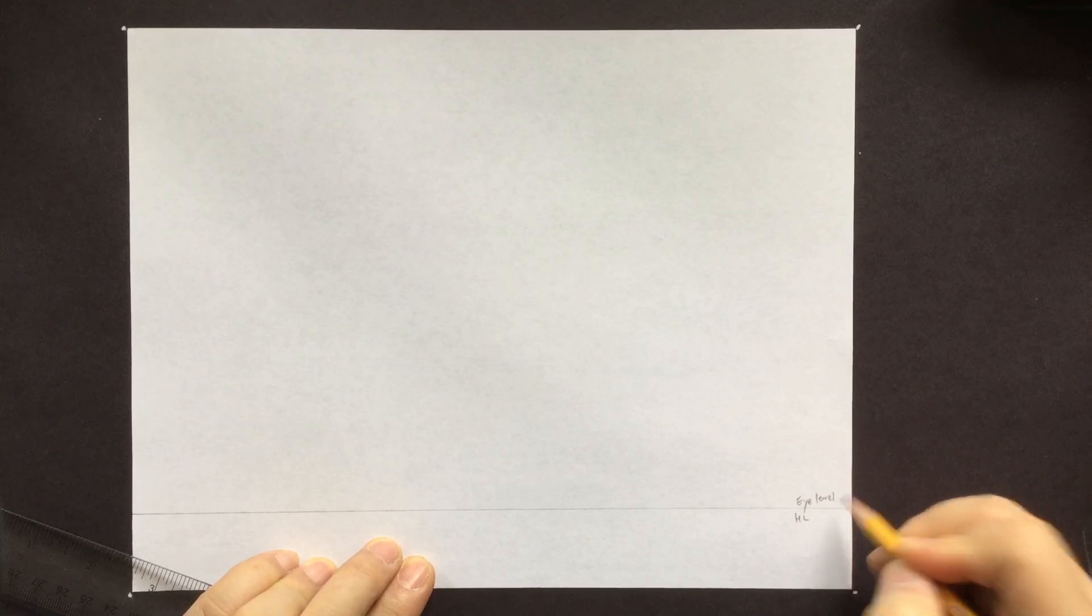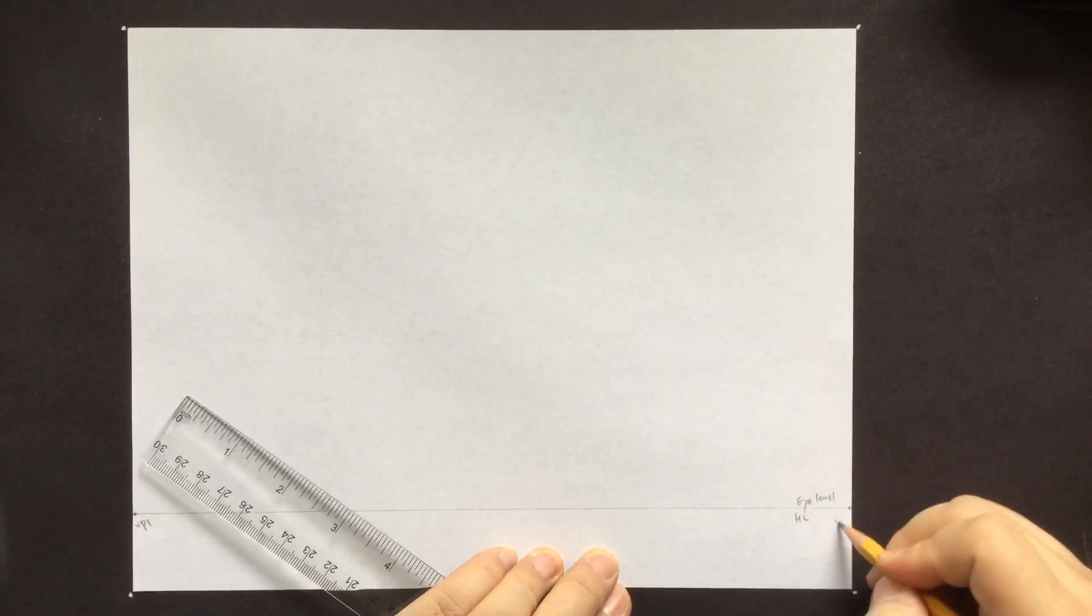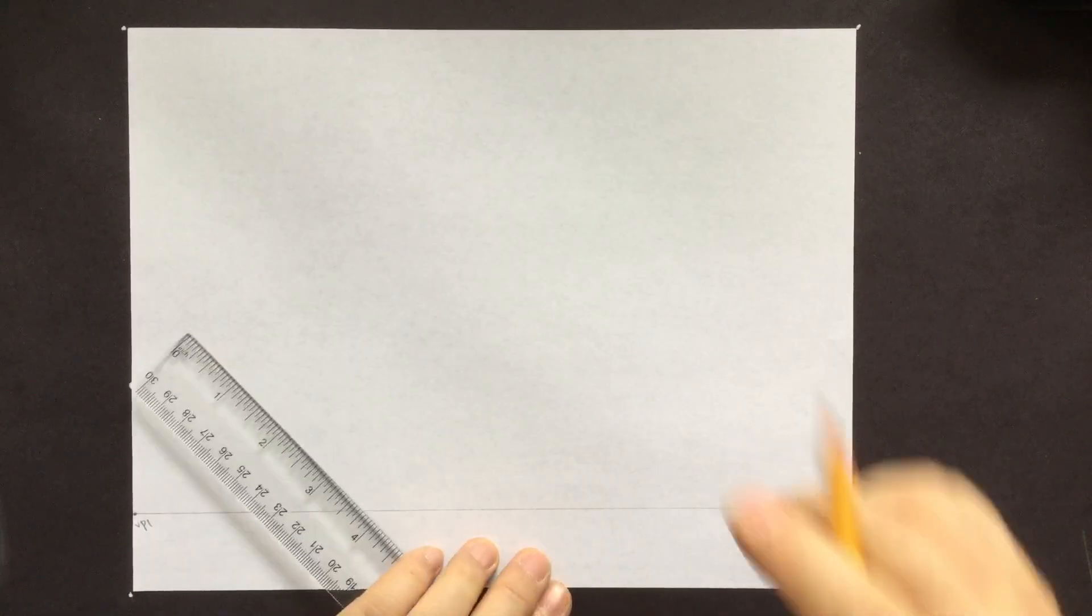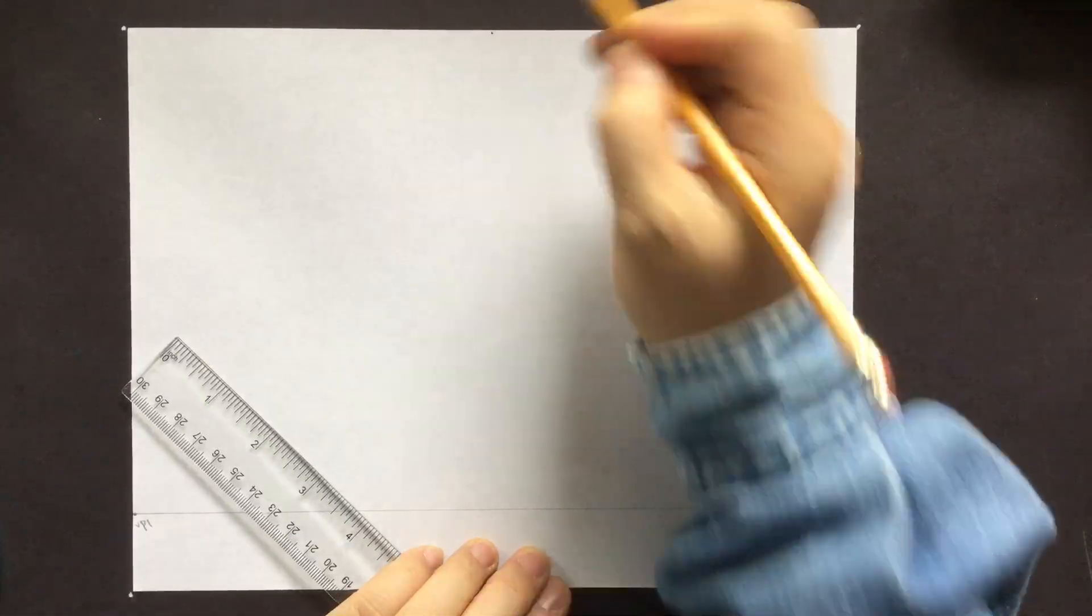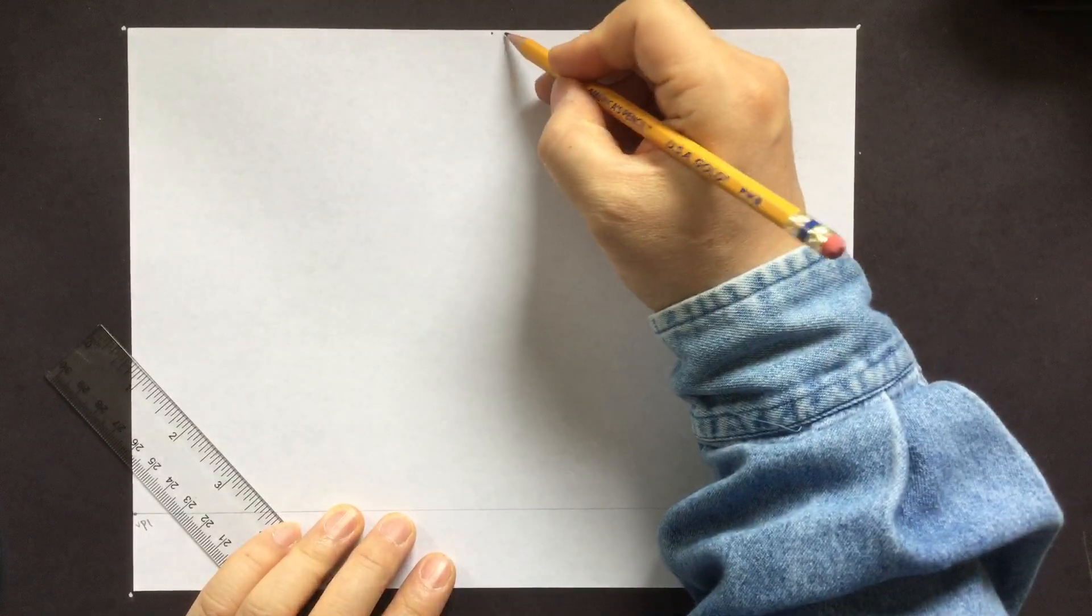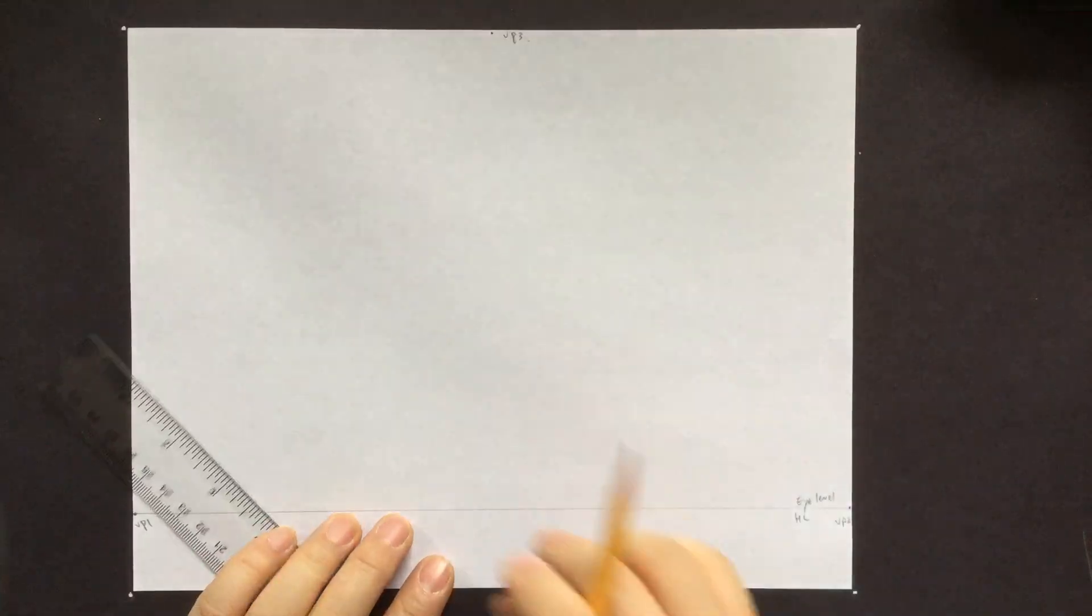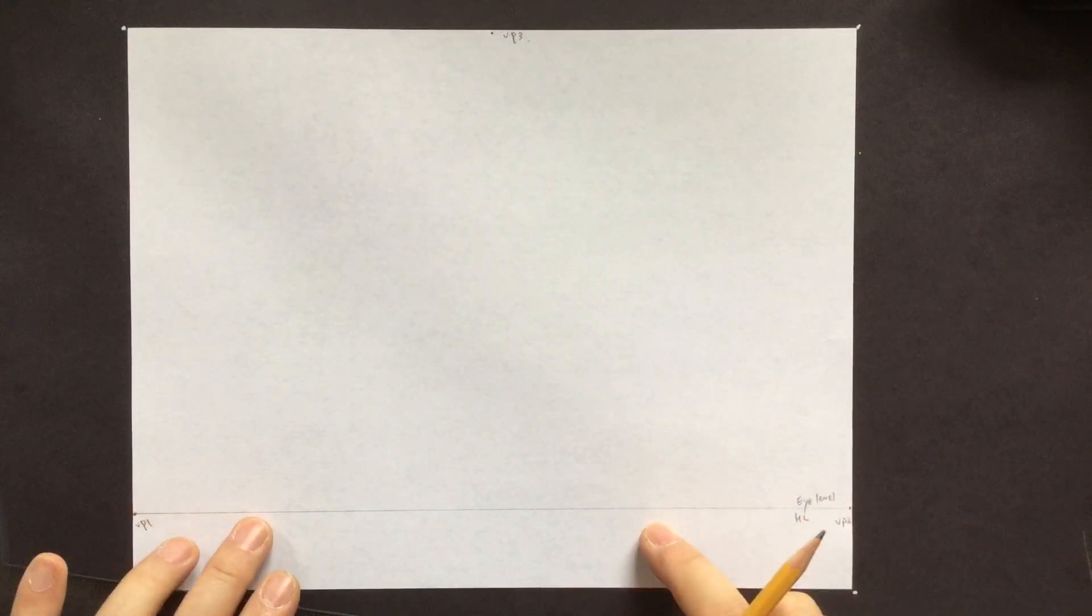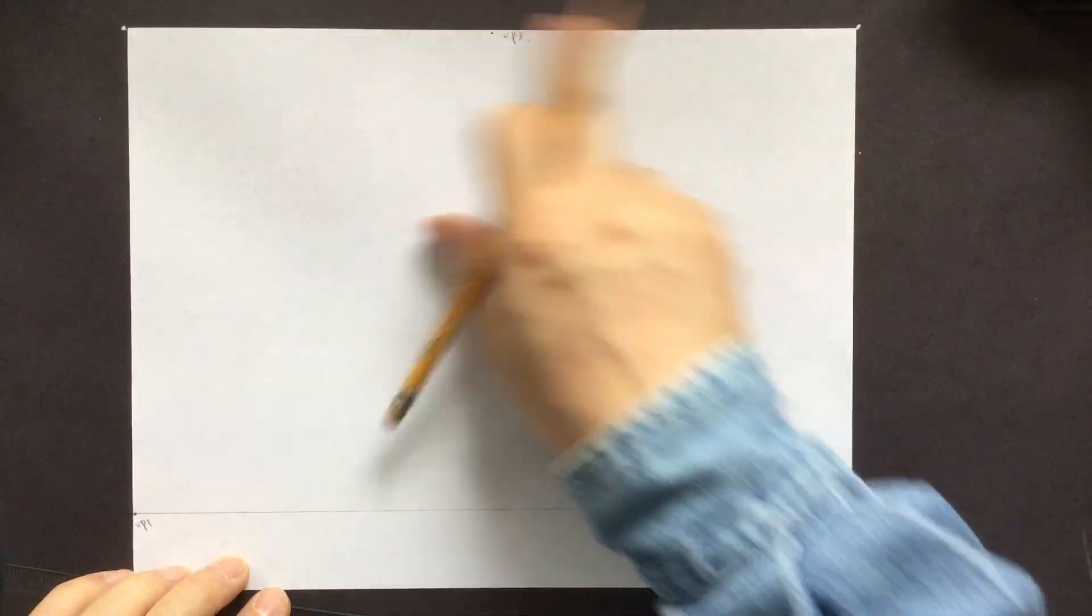So this is a horizon line. It indicates eye level. As usual, we're going to put VP1, vanishing point 1, vanishing point 2, vanishing point 3. You can always change the vanishing point. It doesn't have to be on the edge. It could extend, it could be narrow, it could go left, right, up and down.